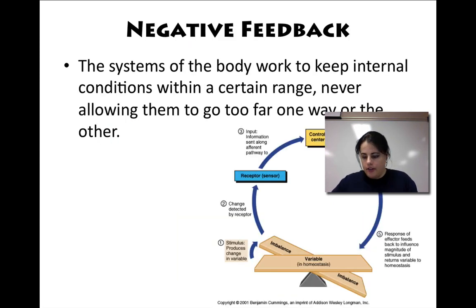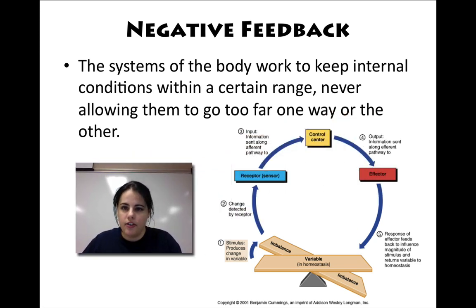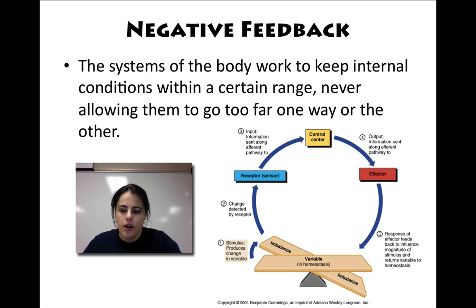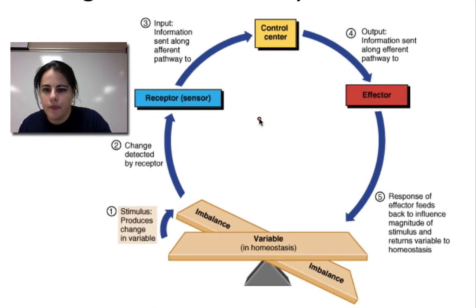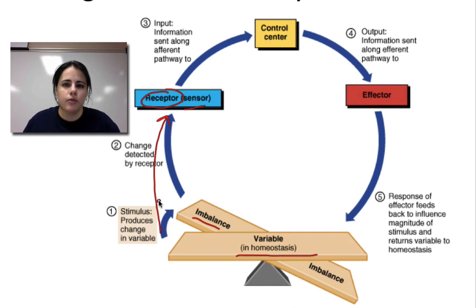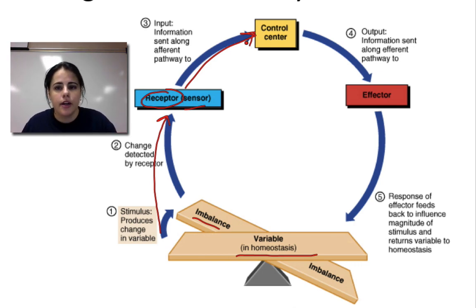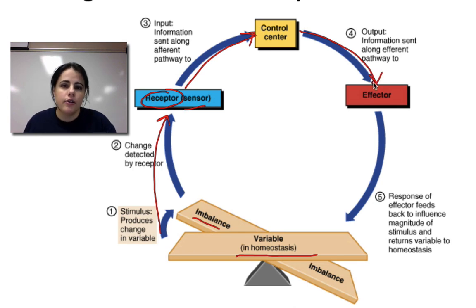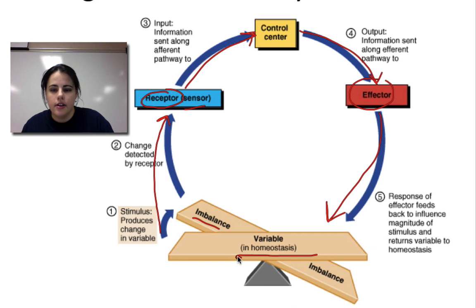Negative feedback is the main method living organisms use to maintain homeostasis — how we don't go too far high or too far low. Here's how it works: if something causes an imbalance, a sensor or receptor detects the signal. The receptor sends a signal to the part of the body that can do something about it — most often the brain. The brain decides what needs to be done to correct the imbalance and sends a signal to the effector. The effector carries out a chemical process that brings you back to your set point.